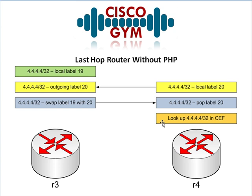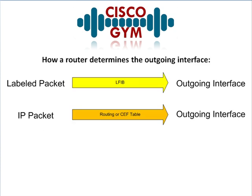The CEF table says yeah, I know that — that's your loopback 0 interface, let me go ahead and send this out to it. So basically the takeaway here is that as we would imagine normal MPLS working, this last-hop router is going to have to do two lookups. It's going to have to do a lookup in its LFIB and then a lookup in its routing table — it's actually going to do both of these operations.